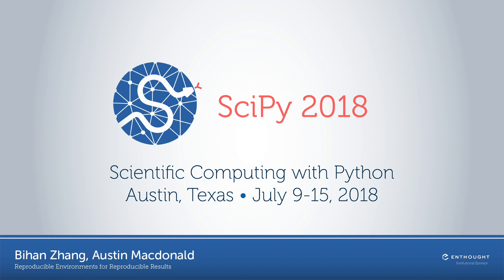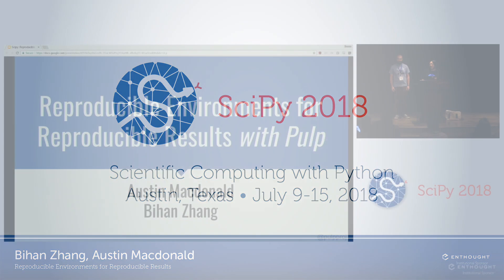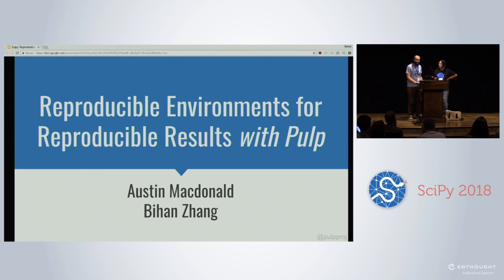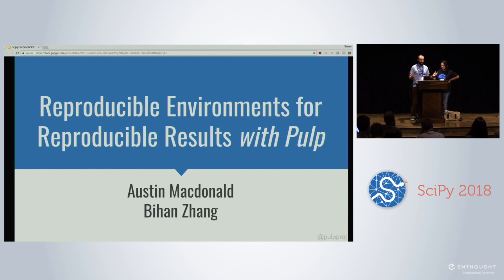Hi, my name is Bi-Han Zeng and I am a software engineer at Red Hat. I'm Austin McDonald, also a software engineer at Red Hat, and together Bi-Han and I work on the Pulp team. We're here today to share how you can use Pulp to make science better.